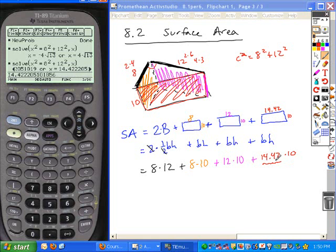So I have my value for the 14. And I'm just going to type in what I have. So I have 8 times 12 plus 8 times 10 plus 12 times 10 plus this 14. This whole value times 10.